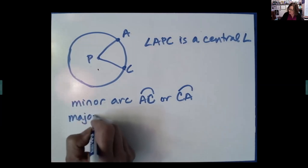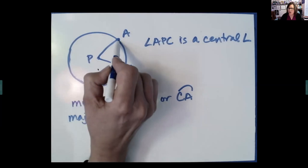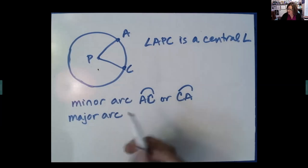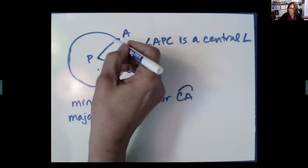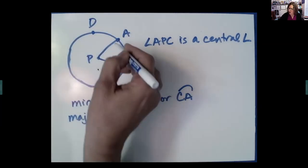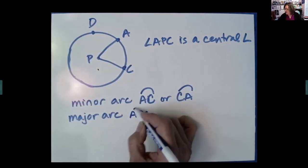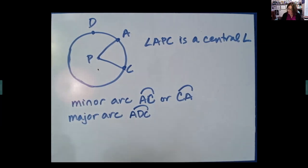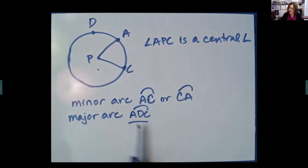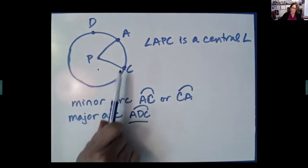A major arc means we're going to start at A and go to C the long way around. We can't just call it arc AC because we already have something named that. So what we do is say: start at A, then give any point on the circle on that major arc. For example, arc ADC — start at A, go through D, and land on C. You need to be careful with a major arc; we name it with three letters so you don't get it confused with an angle.